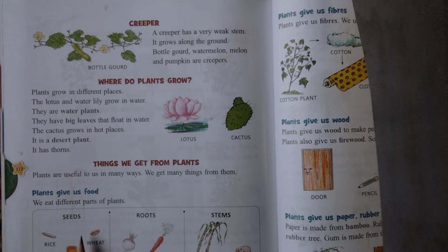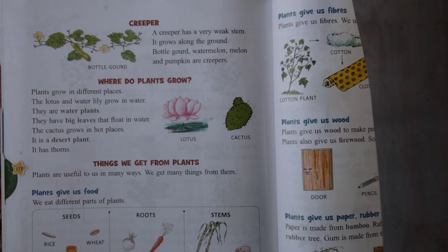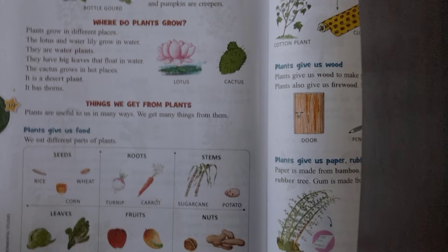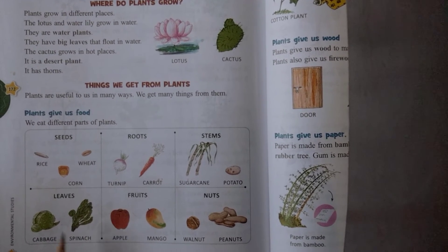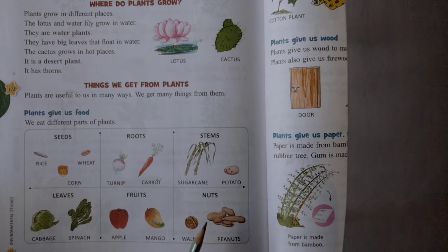We eat different parts of plants. We eat seeds, for example rice, wheat, and corn. We eat roots such as turnip, shalgam, and carrot. We eat stems such as sugarcane and potato. We eat leaves. We eat fruits like apple and mango. We also eat nuts like walnuts and peanuts.